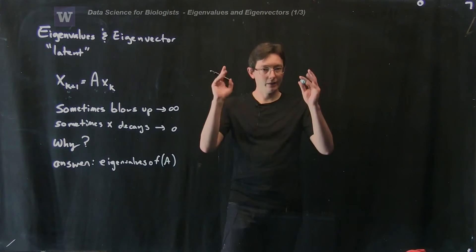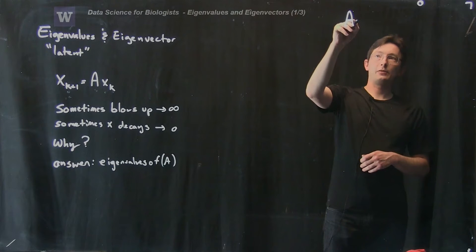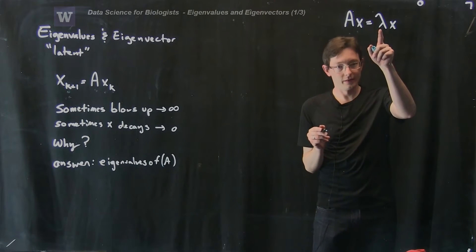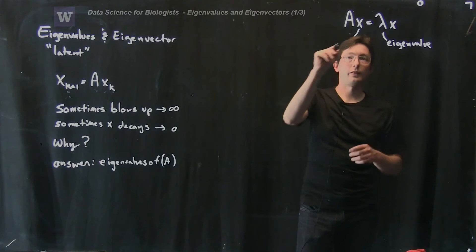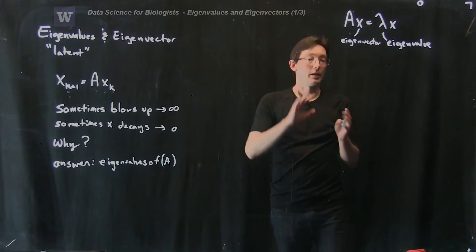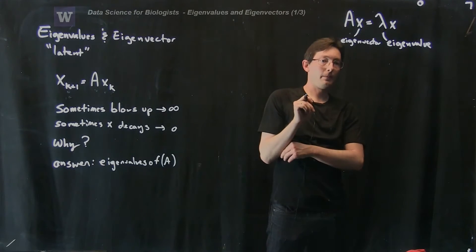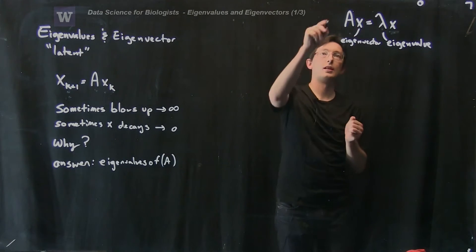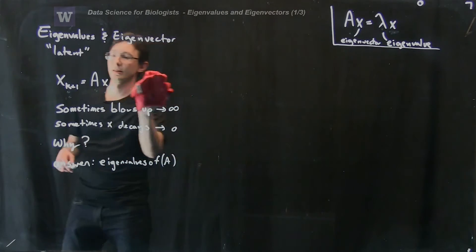In particular, what we're looking for — these eigenvalues and eigenvectors — we're looking for special vectors x and special numbers lambda such that A times x equals lambda times x. Lambda is my eigenvalue and x is my eigenvector. For a given square matrix A, there exist these special vectors x and special numbers lambda such that if I take my matrix A times this eigenvector, I get basically the same eigenvector but scaled by lambda.